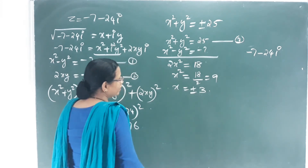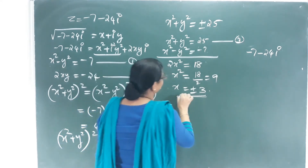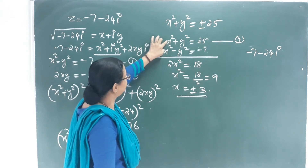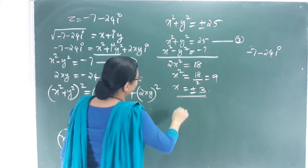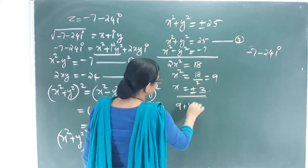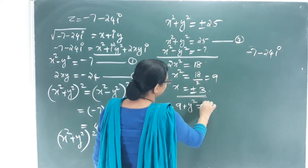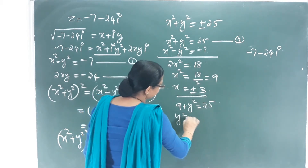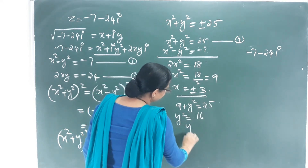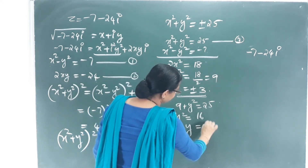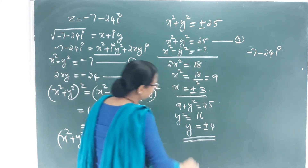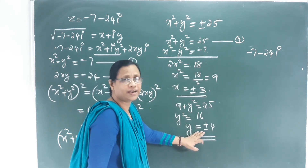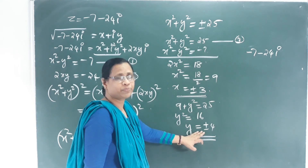Substituting x² = 9 into x² + y² = 25: 9 + y² = 25, so y² = 16, giving y = ±4. So x = ±3 and y = ±4, giving four possible combinations.